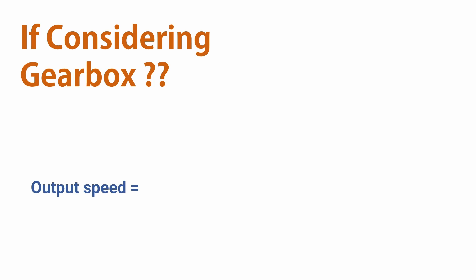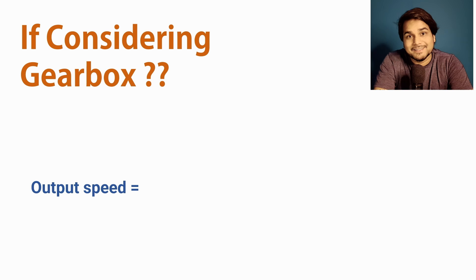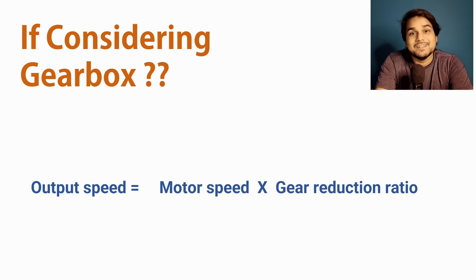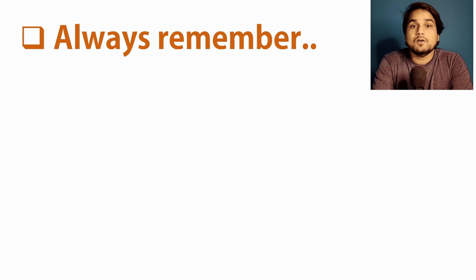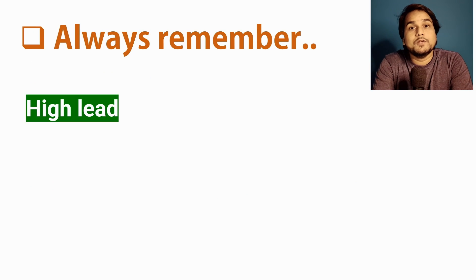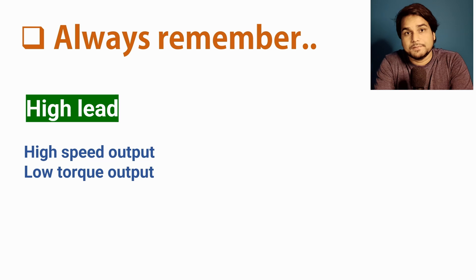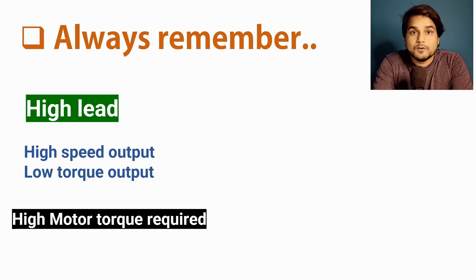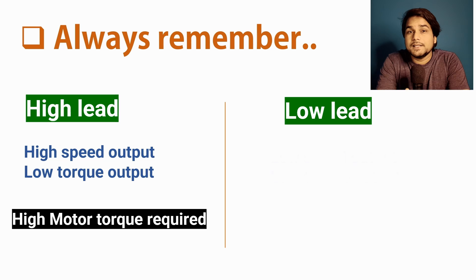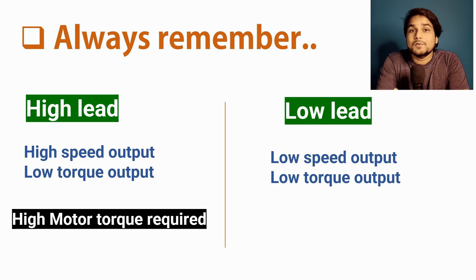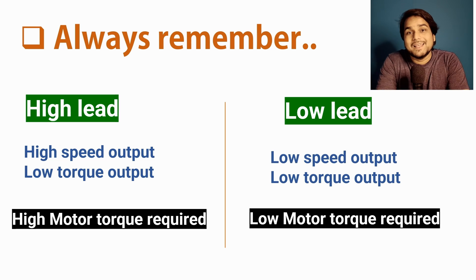If you are planning to use a gearbox, you can recalculate the RPM with the gearbox reduction ratio and then select the lead accordingly. Always remember that a higher lead value gives higher speed but requires more torque, while a lower lead gives lower speed but requires less motor torque for the same application — we will see this in more detail in the motor selection video later in this series.